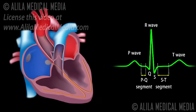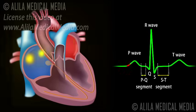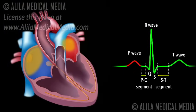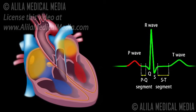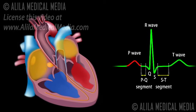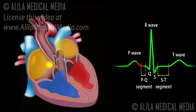When the atria are full of blood, the SA node fires, and electrical signals spread throughout the atria and cause them to depolarize. This is represented by the P wave on the ECG. Atrial contraction, or atrial systole, starts about 100 ms after the P wave begins. The PQ segment represents the time the signals travel from the SA node to the AV node.